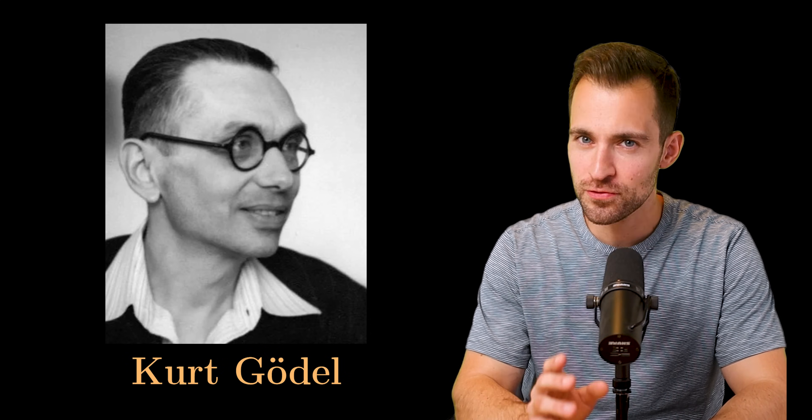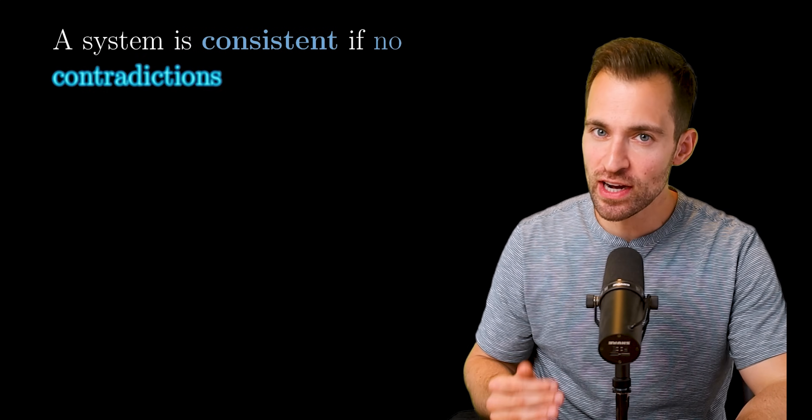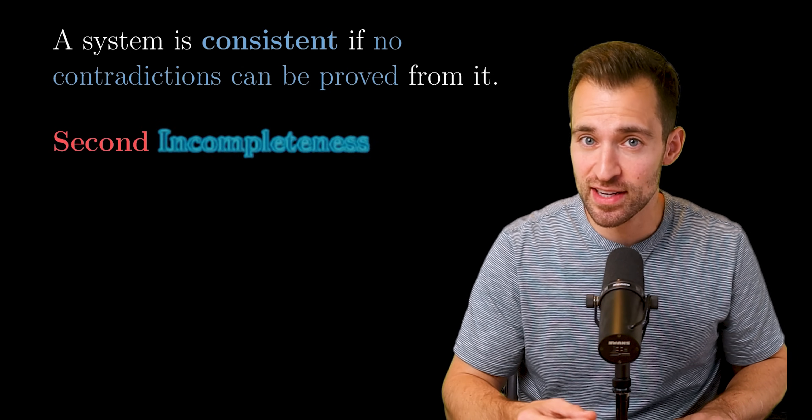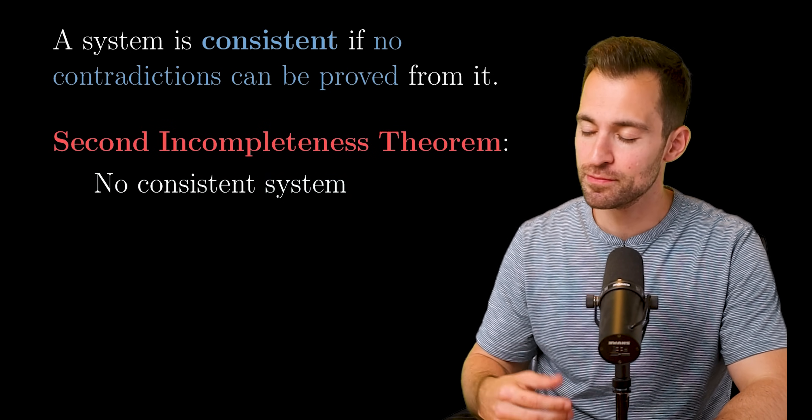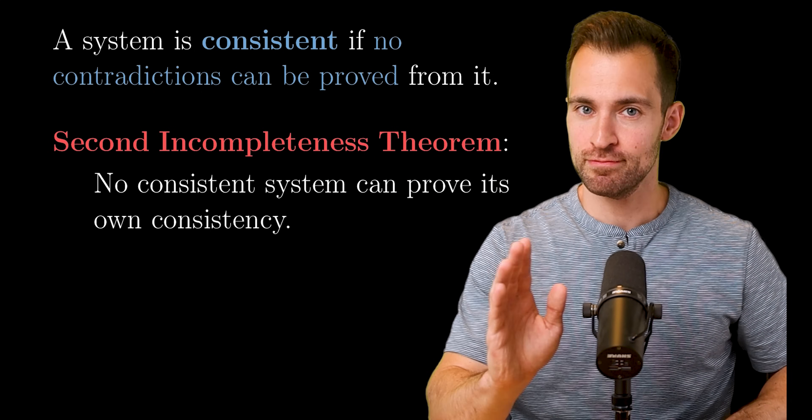To do that, we're going to need Kurt Gödel. First, a system is consistent if no contradictions can be proved from it. Now, Gödel's second incompleteness theorem states that no consistent system, strong enough for arithmetic, can prove its own consistency. Okay, that's it.